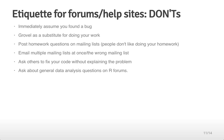Some examples of don'ts. Things that will slow down the response to your answer: First of all, if you immediately assume you found a bug in somebody else's software, or grovel as a substitute for doing your own work, that will make people less inclined to respond. If you post homeworks on mailing lists, people probably won't respond. People can usually tell when you're posting a question, particularly on the in-class forums where you all have the same assignments. If you email multiple mailing lists at once, or the wrong mailing list, your questions may get lost, or people might not respond as quickly as you'd like. Another thing not to do is to ask people to fix your code without explaining the problem. Just putting the code up and saying this code doesn't work won't lead to quick answers. Also, try not to ask your general data analysis questions on the R forums. Ask them in R forums or on CrossValidated.